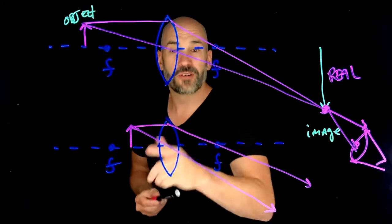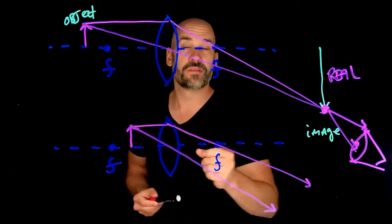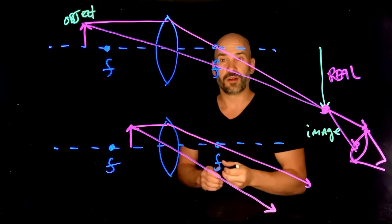Well, it's a converging lens, but these rays don't converge. They're actually diverging.